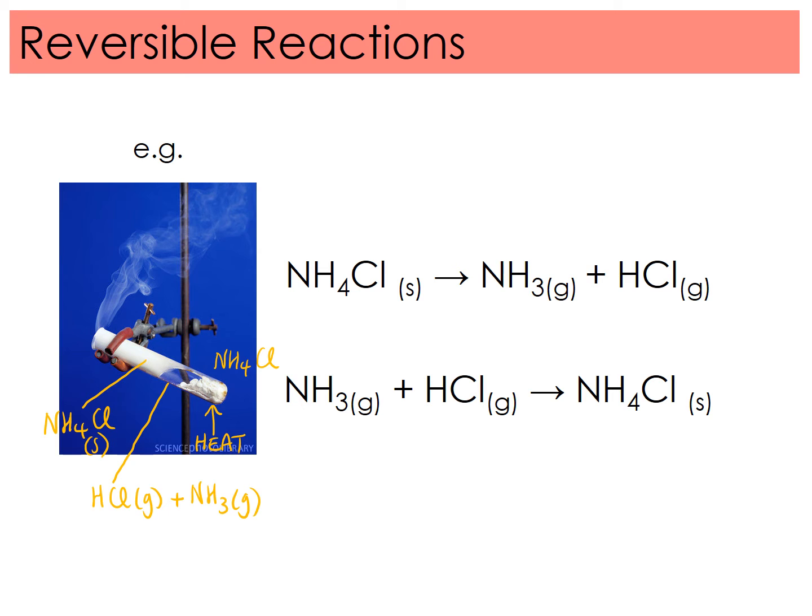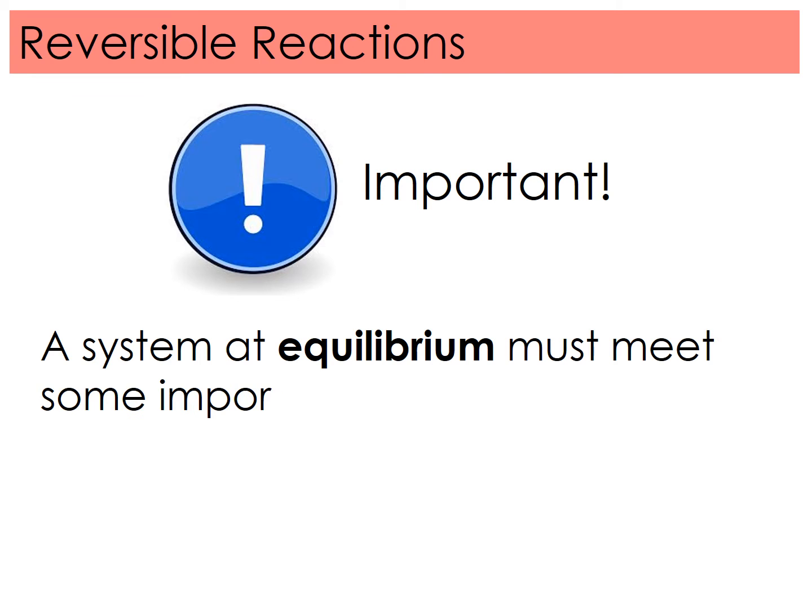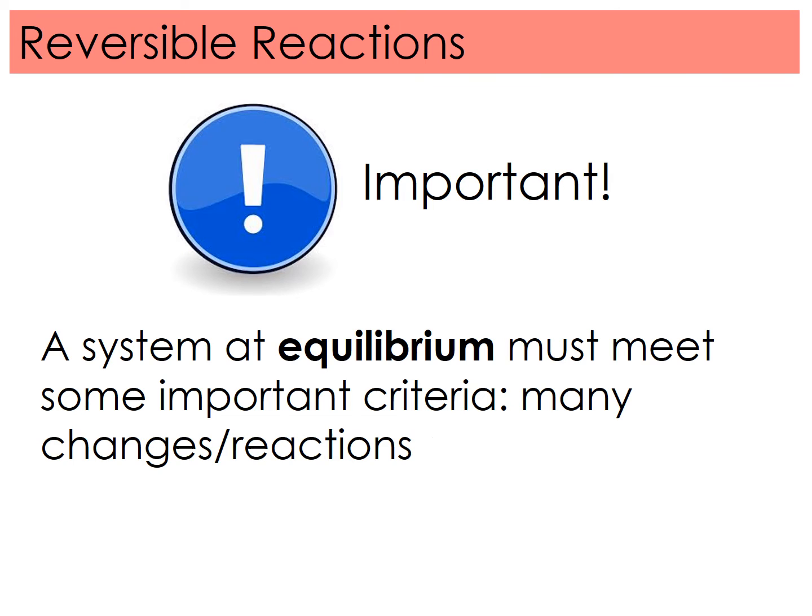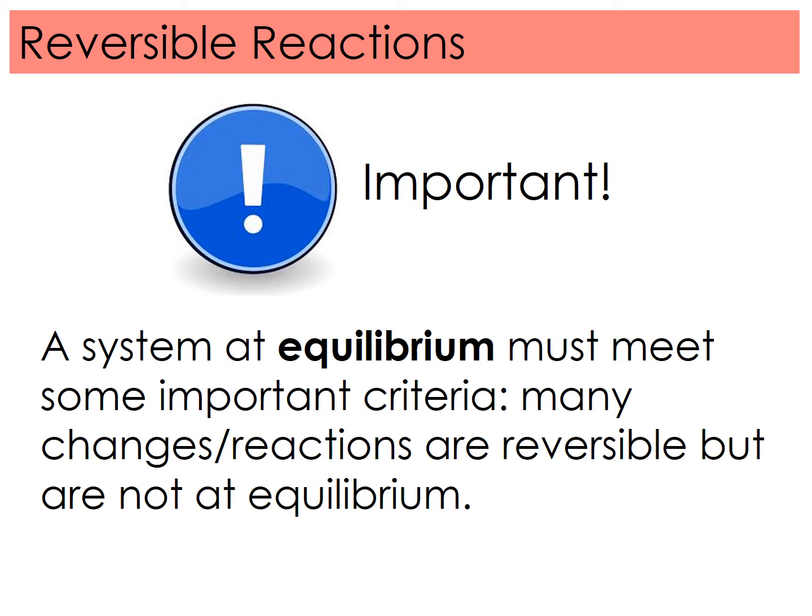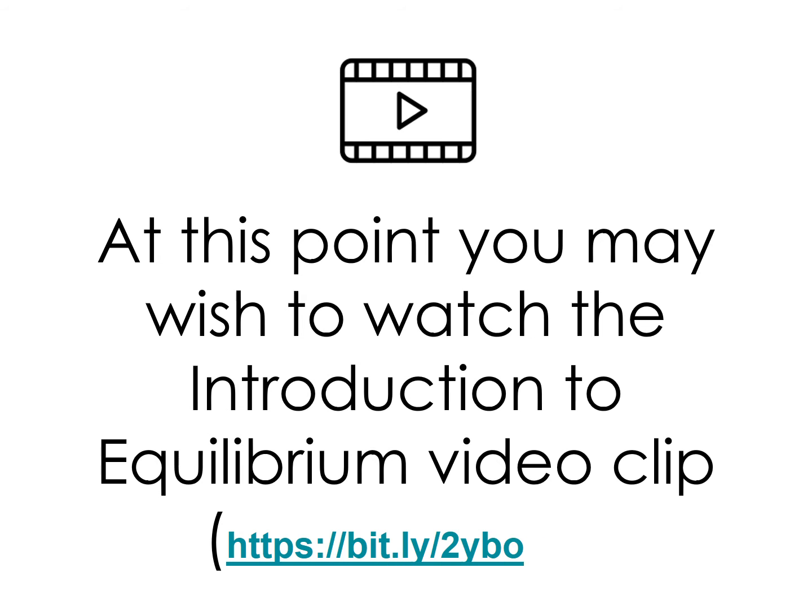So why not? What's going on with this equilibrium? Importantly, a system at equilibrium must meet some important criteria, and many changes or reactions are reversible but are not at equilibrium. At this point, you might want to have a look at another video clip, an introduction to equilibrium video clip. The link is on your file list, but it's also accessible through this file link here if you wish.